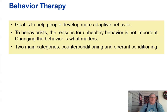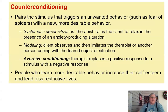Behavior therapy: the goal is to help people develop more adaptive behavior. To behaviorists, the reasons for unhealthy behavior are not important — changing the behavior is what matters. The two main categories are counter-conditioning and operant conditioning. Counter-conditioning pairs a stimulus that triggers an unwanted behavior, such as fear of spiders, with a new and more desirable behavior. Systematic desensitization trains the client to relax in the presence of an anxiety-producing situation. Modeling involves the client observing and imitating the therapist or another person coping with the feared object or situation. Aversive conditioning replaces a positive response to a stimulus with a negative response.